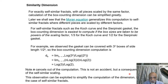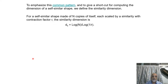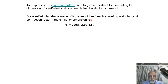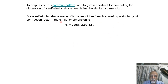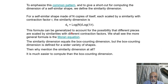This observation can be used to simplify the computation of dimension for self-similar objects. To give a shortcut: for a self-similar shape made up of N copies of itself, each scaled by the same contraction factor r, the similarity dimension is defined as d_s = log N / log(1/r). This is the definition you will find in most of the literature when studying fractals.